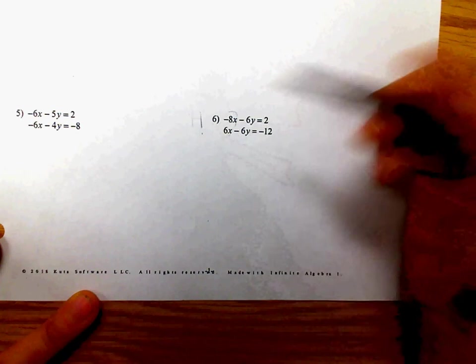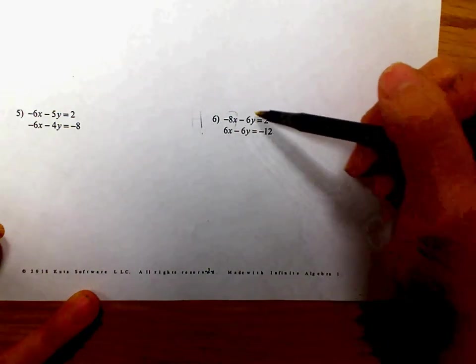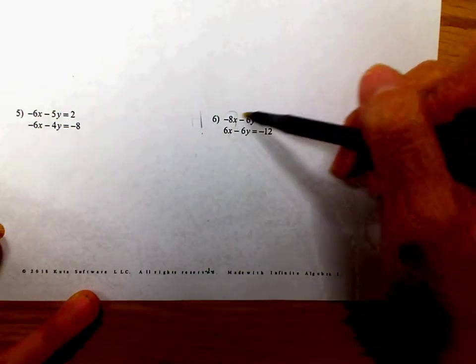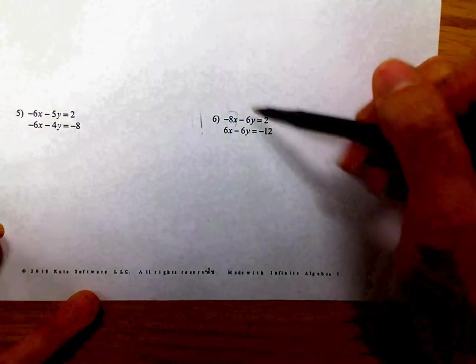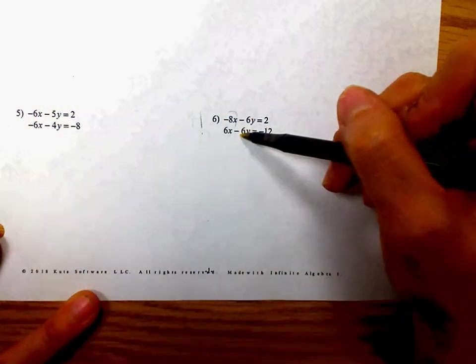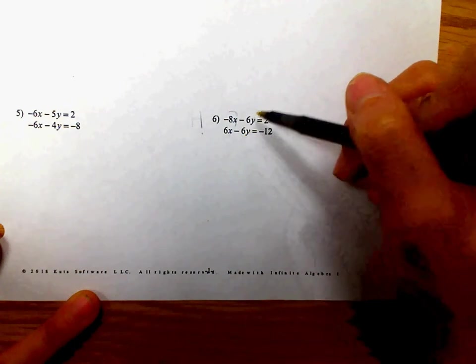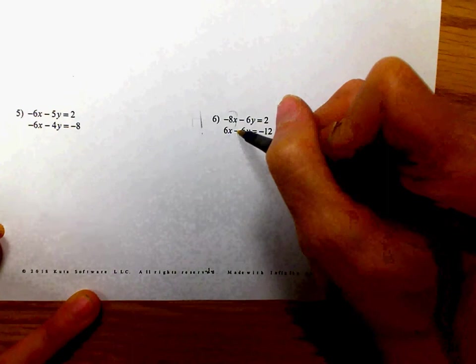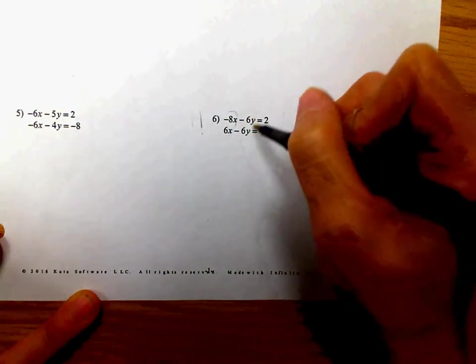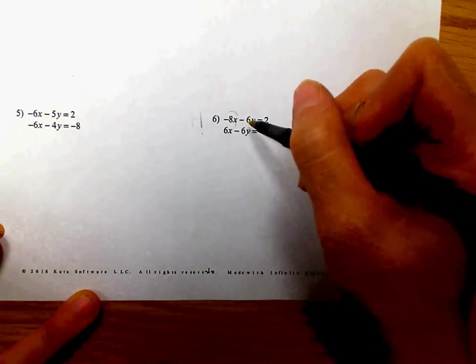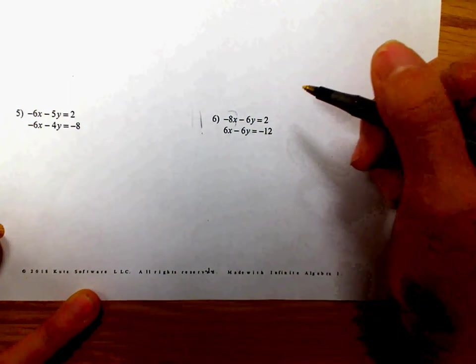For example, if I want to eliminate the X's, the -8 and 6 will not eliminate. And if I multiply one of them, it's never going to become an 8 or 6. So I'd have to multiply top and bottom by, you know, multiply the top by 6 and the bottom by 8 so that becomes -48 and +48 and they would eliminate. But that's a lot of work. If I go to the Y's here, I see that we've got a 6 and a 6. So these look like they're ready to eliminate.